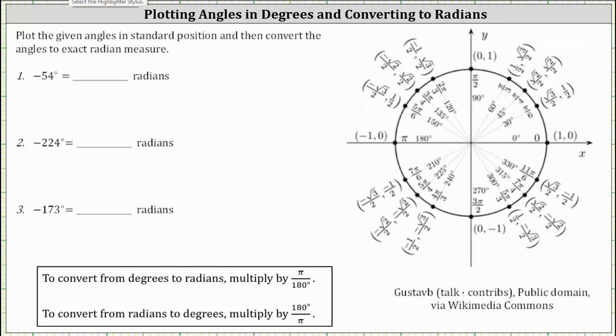We'll also plot the given angles in standard position and then convert the angles to exact radian measure. For number one, we have negative 54 degrees. Let's first plot the angle in standard position.